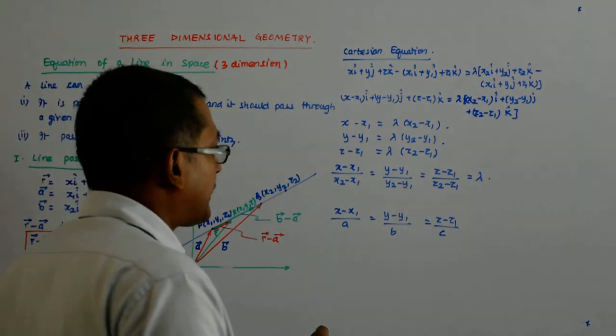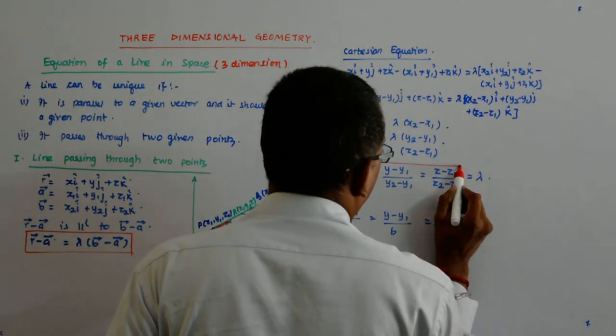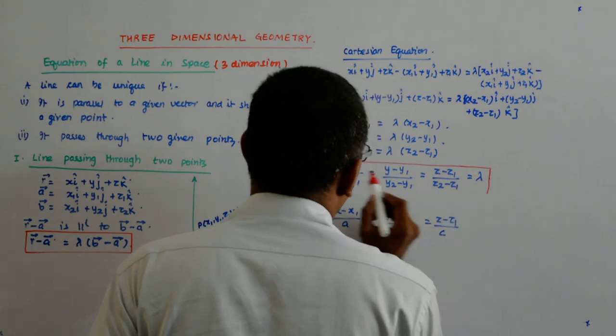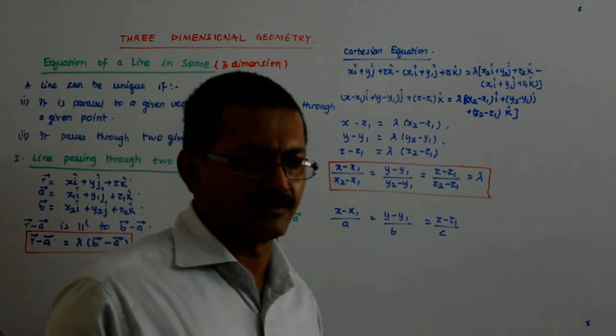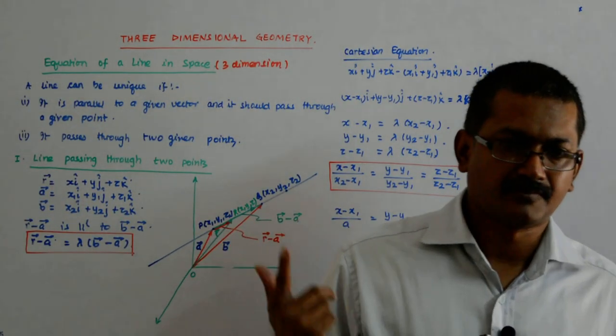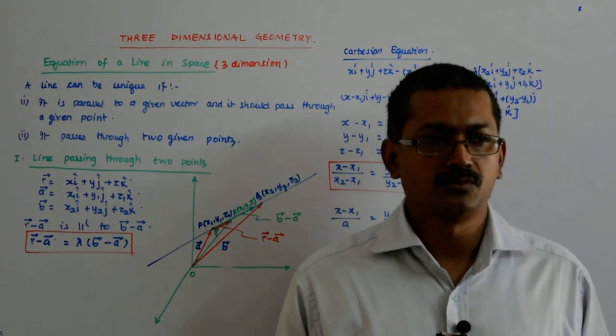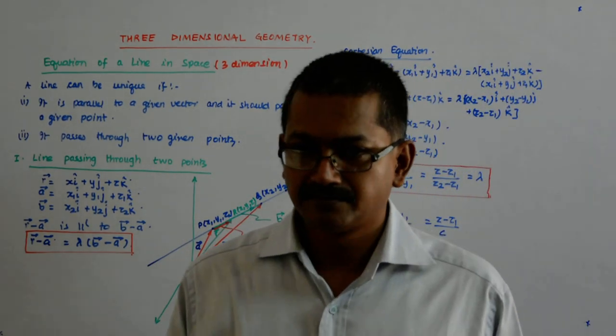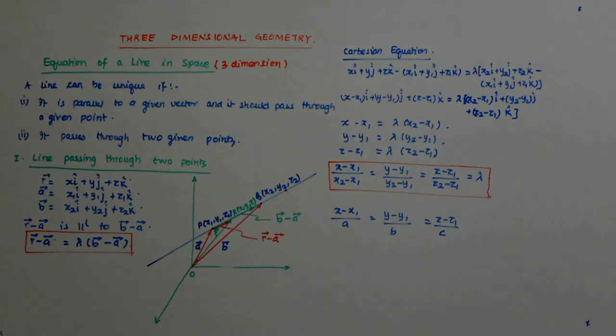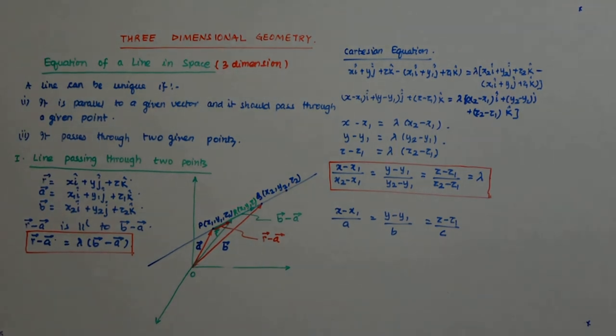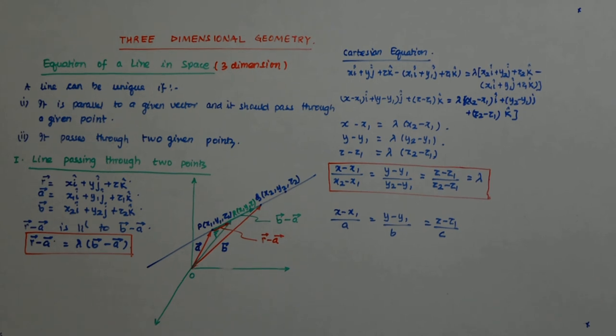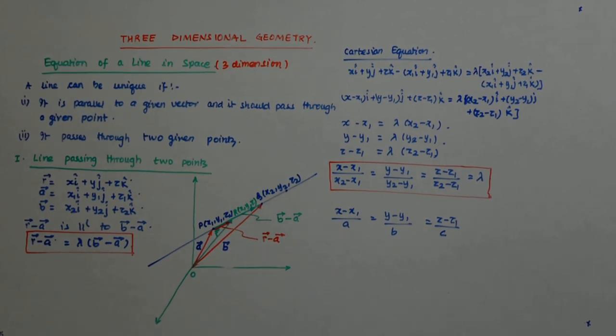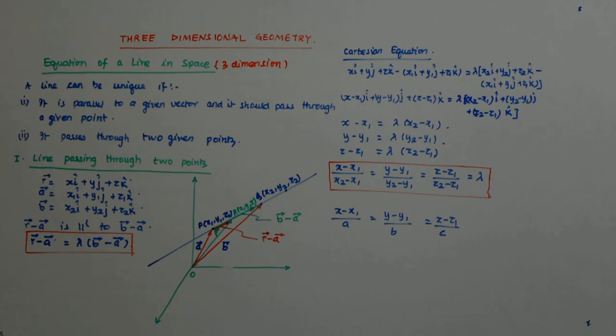Okay? So, this becomes our equation. I will include this because this becomes very handy in solving problems. So, don't forget that. Normally, write it as equal to lambda. It will be helpful. I will tell you how and why. And always remember, we have to deal with both the vector equation as well as the Cartesian equation. You will be asked both. Okay? Let's see.